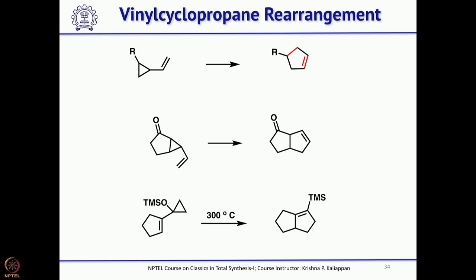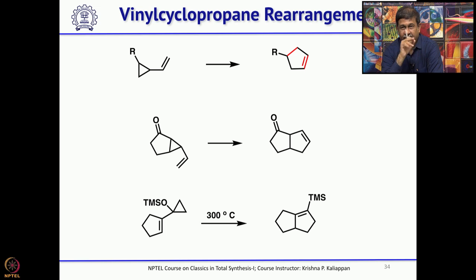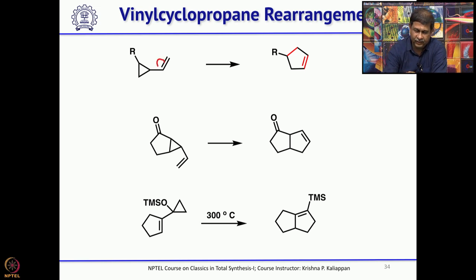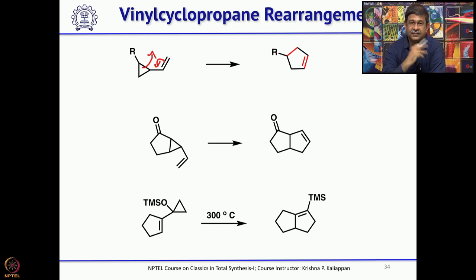One method which is quite frequently used is the vinyl cyclopropane rearrangement. As you know, a vinyl group attached to a cyclopropane can undergo this type of rearrangement. The cyclopropane ring is like a double bond, and because of its ring strain, it tries to open. If you heat it, this can undergo vinyl cyclopropane rearrangement.